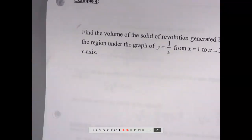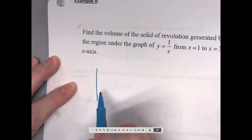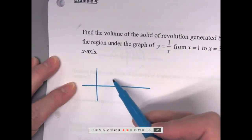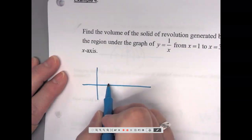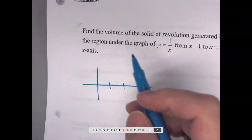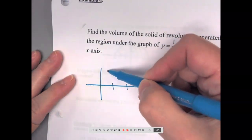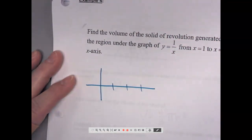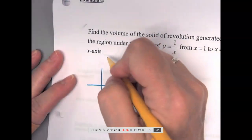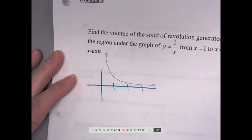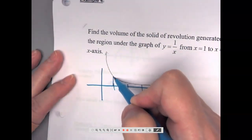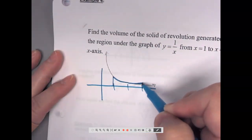Last example. Find the volume of the solid of revolution generated by rotating the region under the graph of y equals 1 over x from 1 to 3 about the x-axis. So 1 over x is our hyperbola. So I have a piece of it in the first quadrant and then another piece in the third quadrant, but I'm only going from 1 to 3. So normally it would come down like this over here. So it would be like that. I just want this piece of it here.